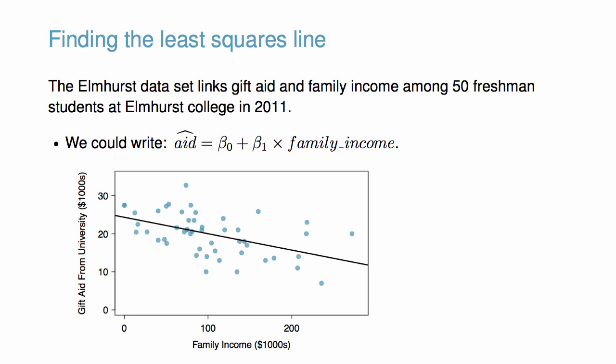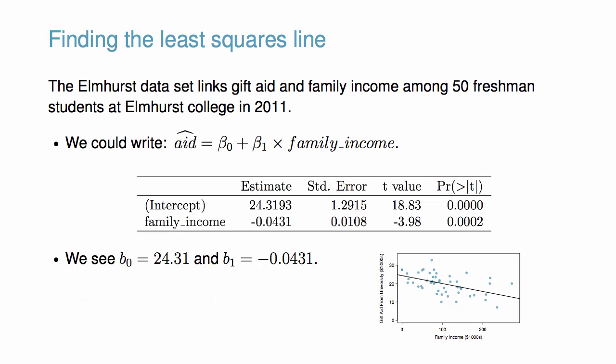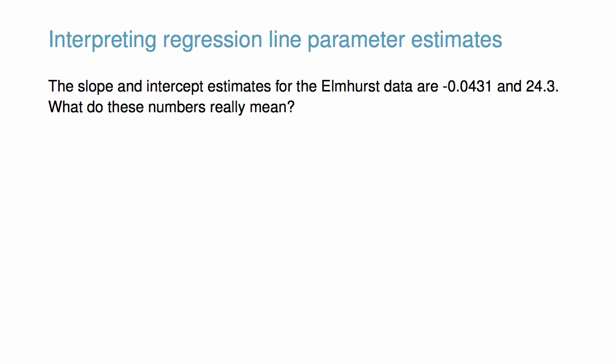Here, the equation is set up to predict gift aid based on a student's family income, which would be useful to students considering Elmhurst. The values β₀ and β₁ are the coefficient parameters of the regression line. Parameter estimates are commonly found using statistical software. In this case, b₀, the estimate of the intercept parameter, equals 24.31, and b₁, the estimate of the slope parameter, equals -0.0431. What do these numbers really mean?